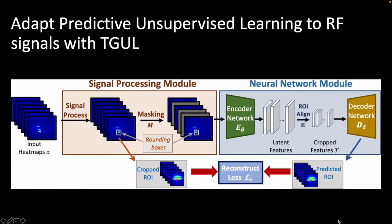In the neural network module, a feature extraction network is applied to extract features from inputs, and then an ROI-align module is applied to the generated bounding box to crop out the regions containing humans. A decoder network is then adopted to predict the original input.